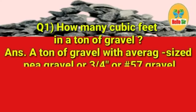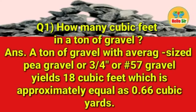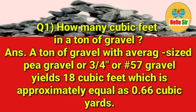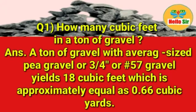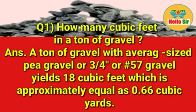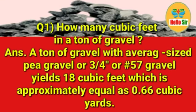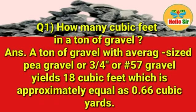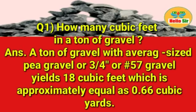So, how many cubic feet are in a ton of gravel? A ton of gravel with average-sized pea gravel or 3/4-inch or number 57 gravel yields 18 cubic feet, which is approximately equal to 0.66 cubic yards.